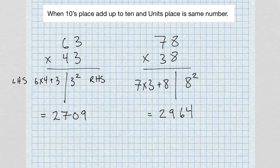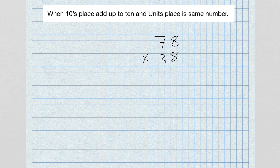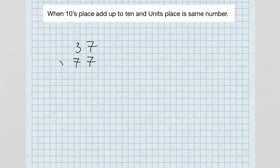I'm going to go ahead and erase this. What's neat about these types of problems is that you can create your own practice problems. If I just pick a random number like 37, I know that when making these problems the tens digits have to add up to 10 and the units digit has to stay the same. Similarly, you could have something like 19 times 99.